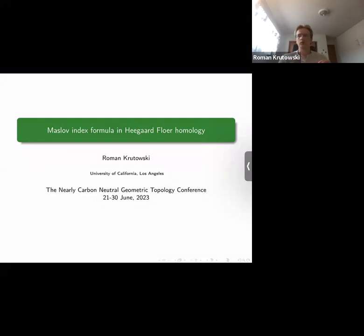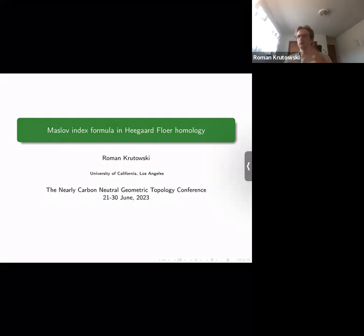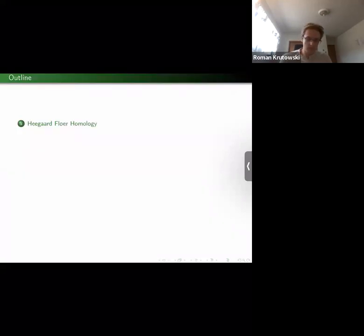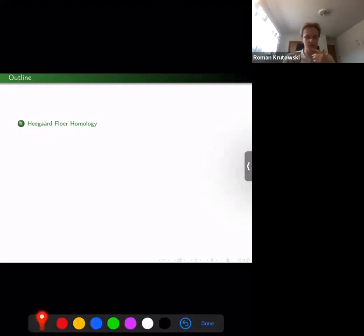The main goal is to figure out a new combinatorial proof of this formula introduced by Robert Lipschitz. The outline for this first talk is as follows: I would first go over some basics of Heegaard Floer homology, and then I would remind how one can compute the Maslov index of a given domain.